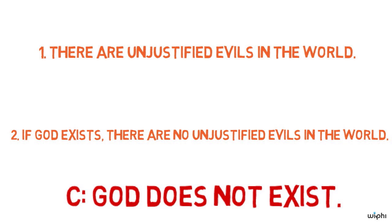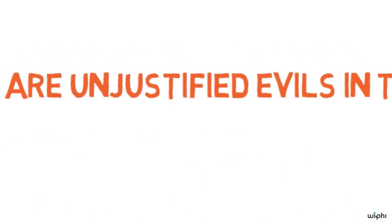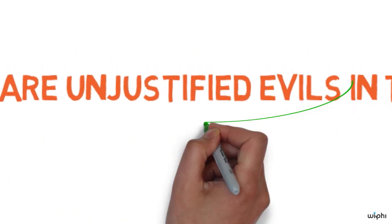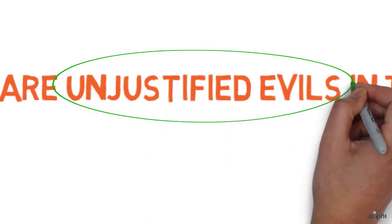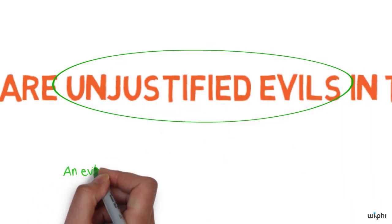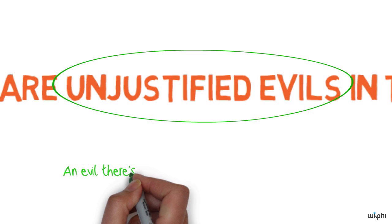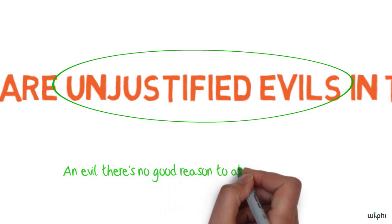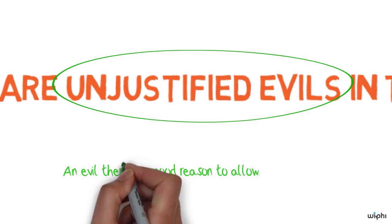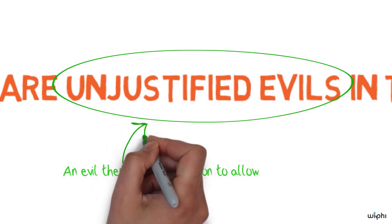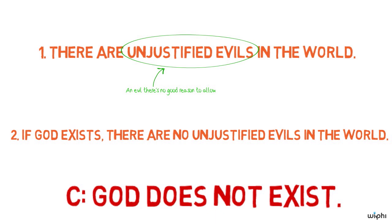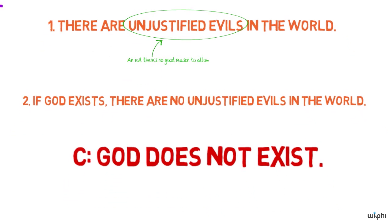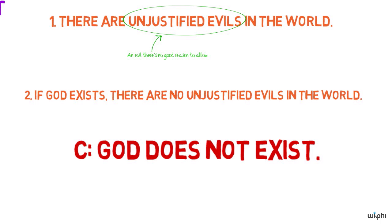Let me clarify a few things before I try to give a bit of an answer. So what is an unjustified evil? An unjustified evil is an evil where there's no good reason to allow it. No good being would allow this evil if he could prevent it. The argument is that there are cases of evil like this in the world, and if there are, then God does not exist.